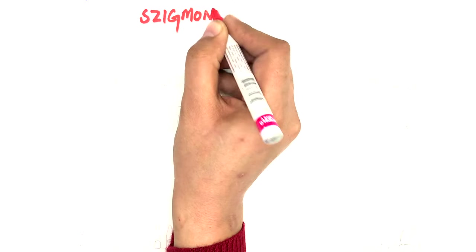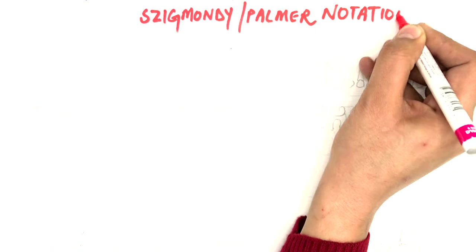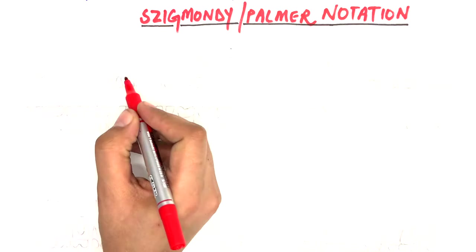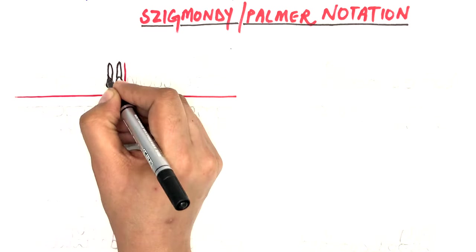The next system is the Palmer system, also called the Zsigmondy system. This system was first presented by Adolf Zsigmondy in the year 1861, where he used a Zsigmondy cross to record quadrants. It was later modified by Palmer and termed the Zsigmondy-Palmer notation. The Palmer system is a four-quadrant tooth numbering system in which the dentition is divided into four quadrants by a vertical line at the mid-sagittal plane and a horizontal line separating the upper and lower jaws.